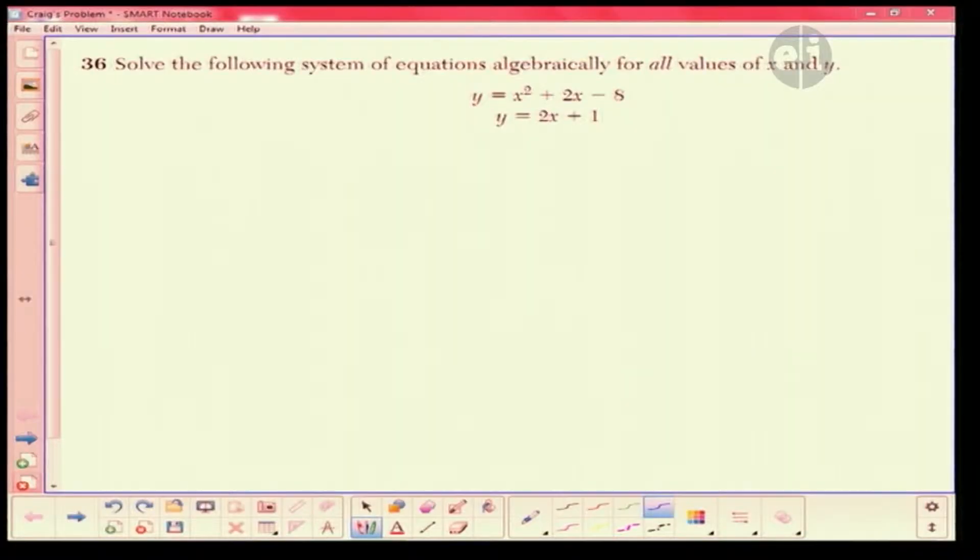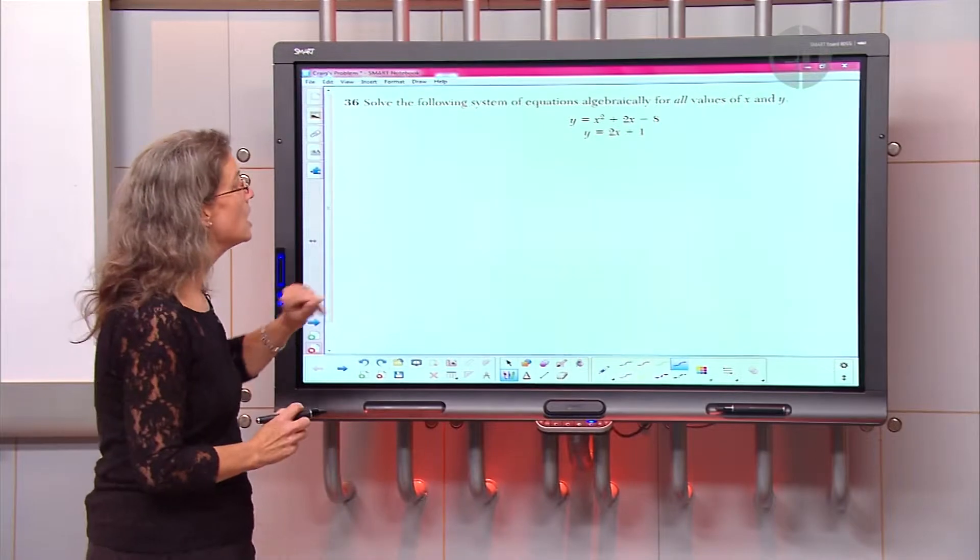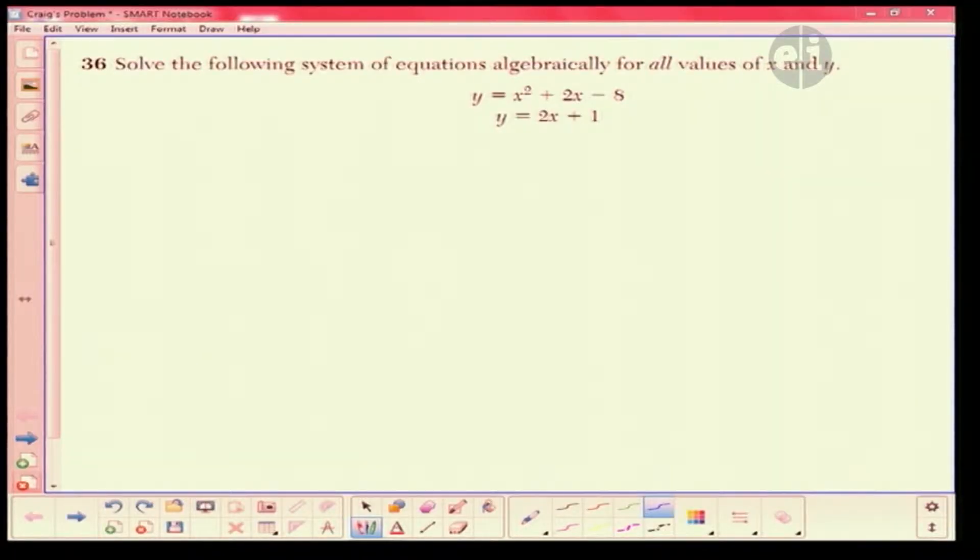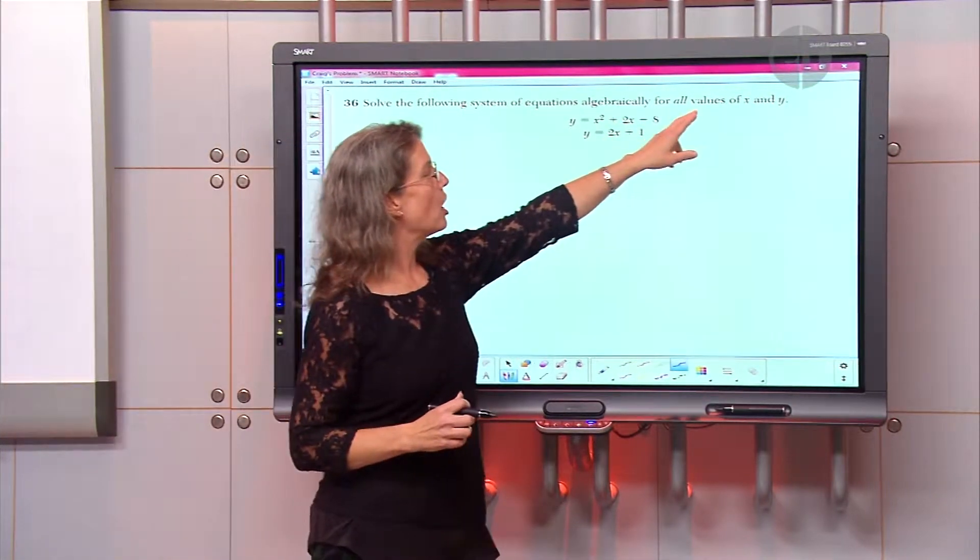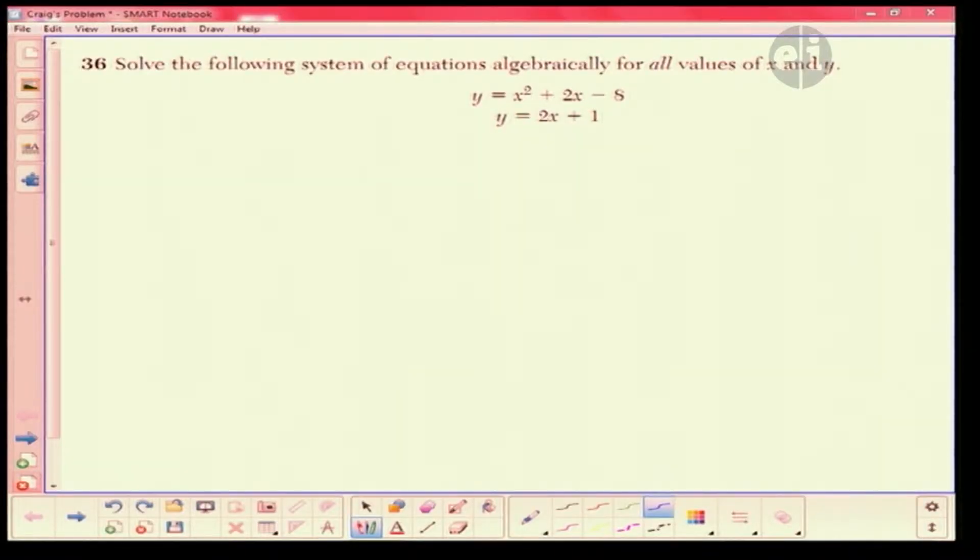So here's the problem. It says solve the following systems of equations. Systems means there's at least two. Algebraically, that means you cannot graph it, you can't draw a picture, you actually have to do the mathematics, and for all values of x and y. So we have y is equal to x squared plus 2x minus 8, and then y is also equal to 2x plus 1.